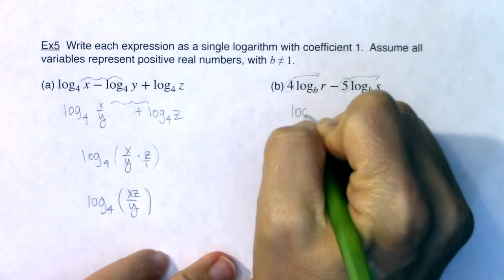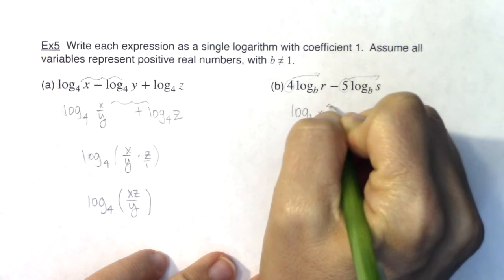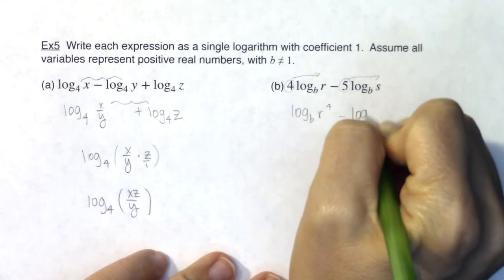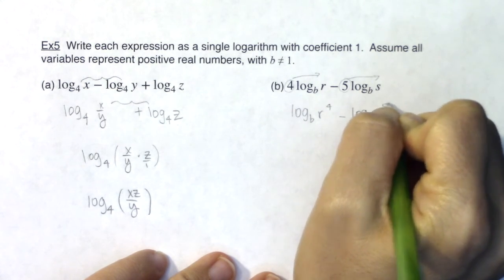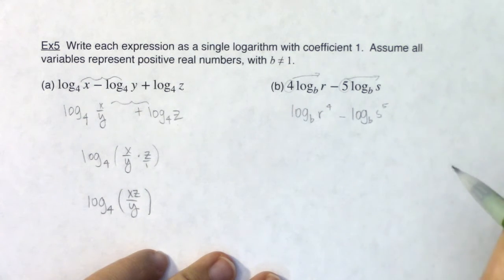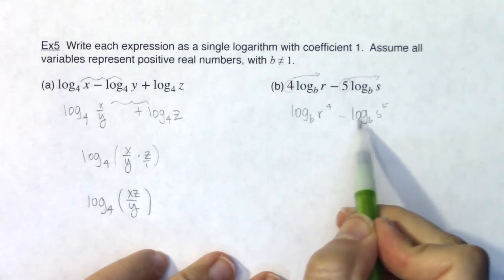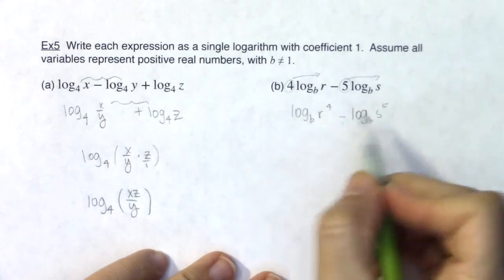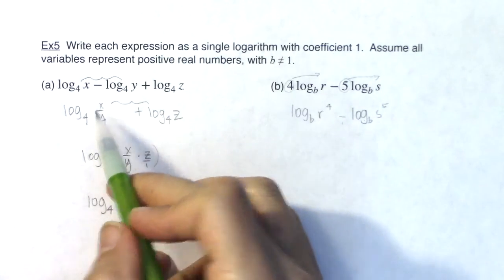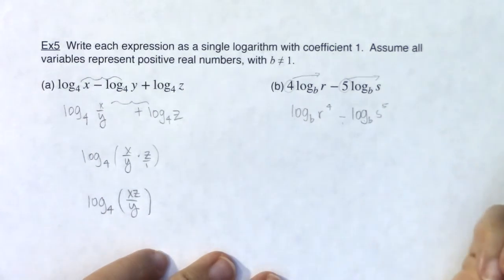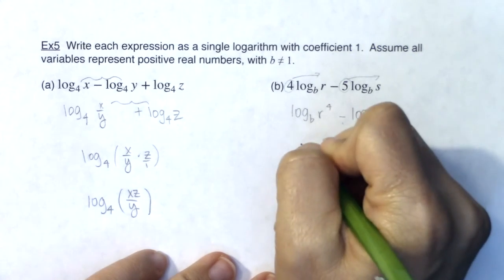So this is going to simplify to log base b of r to the fourth minus log base b of s to the fifth. And then I can see I have two separate logarithms separated by a subtraction sign, so I can use the quotient rule, just like I used the quotient rule over here, or I should say the quotient property of logarithms.